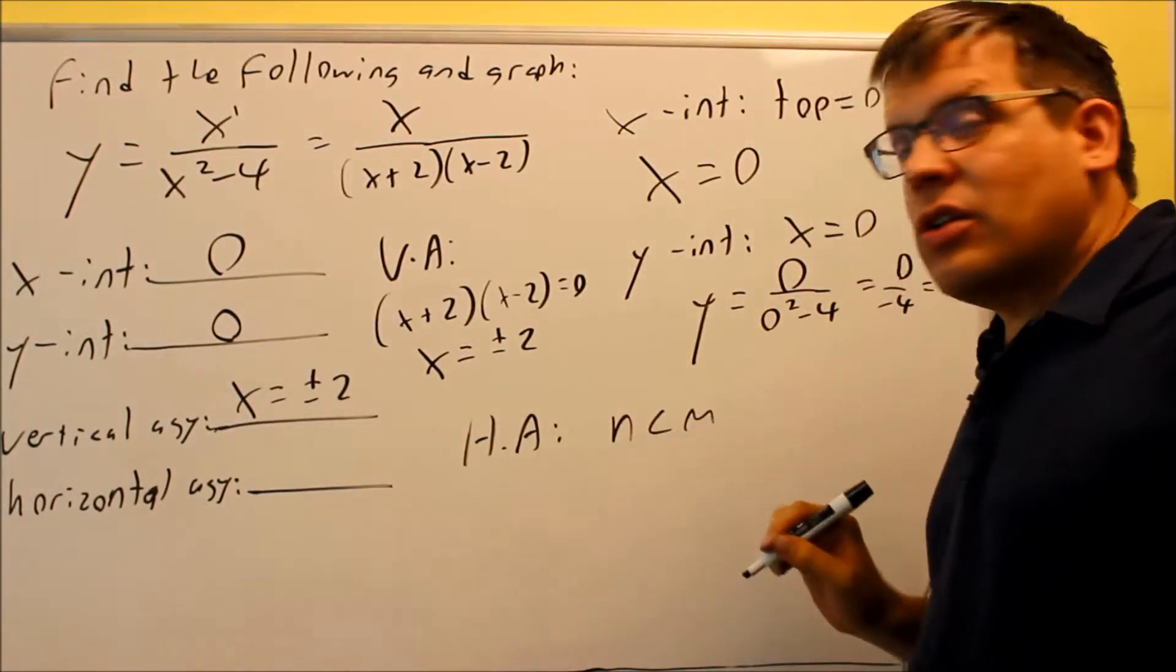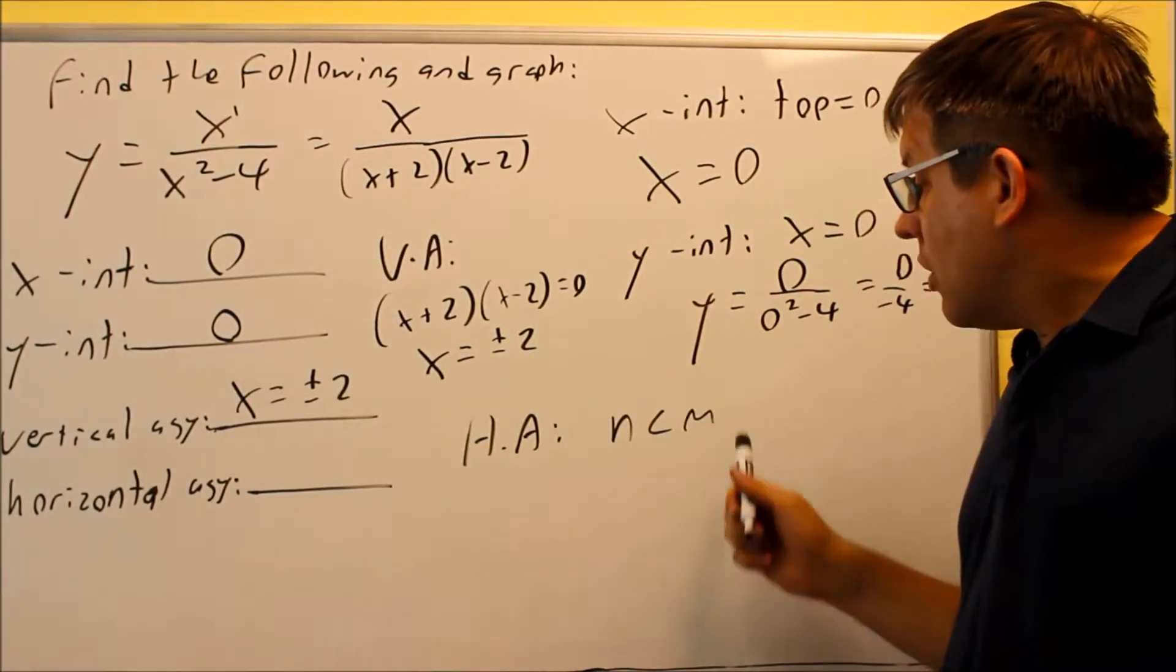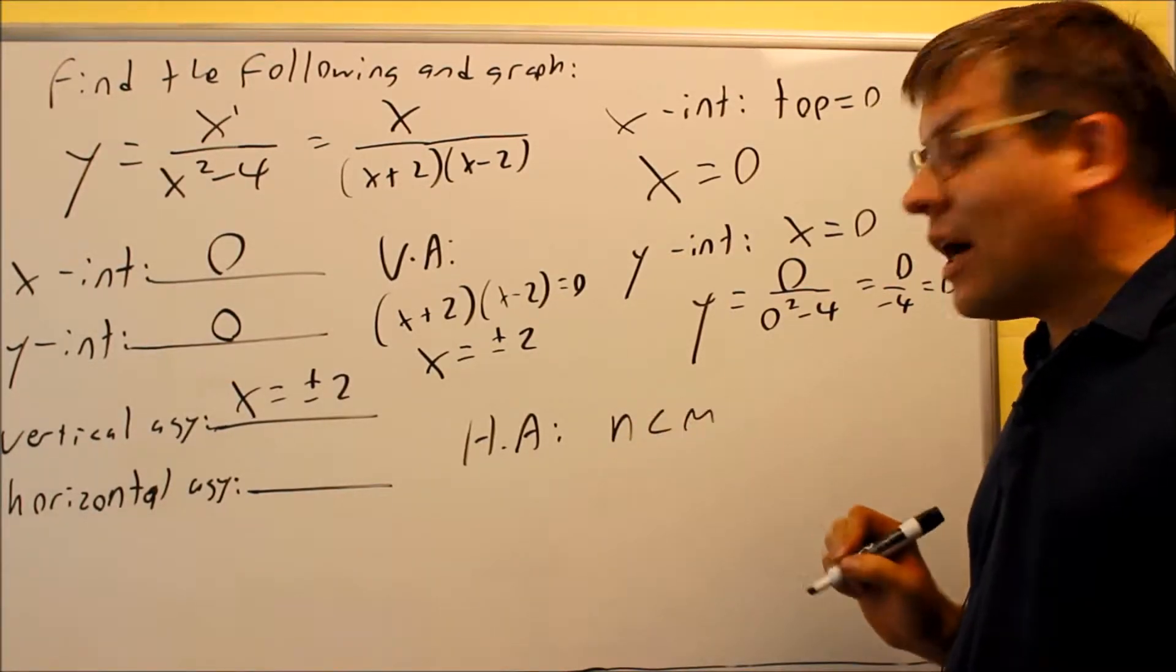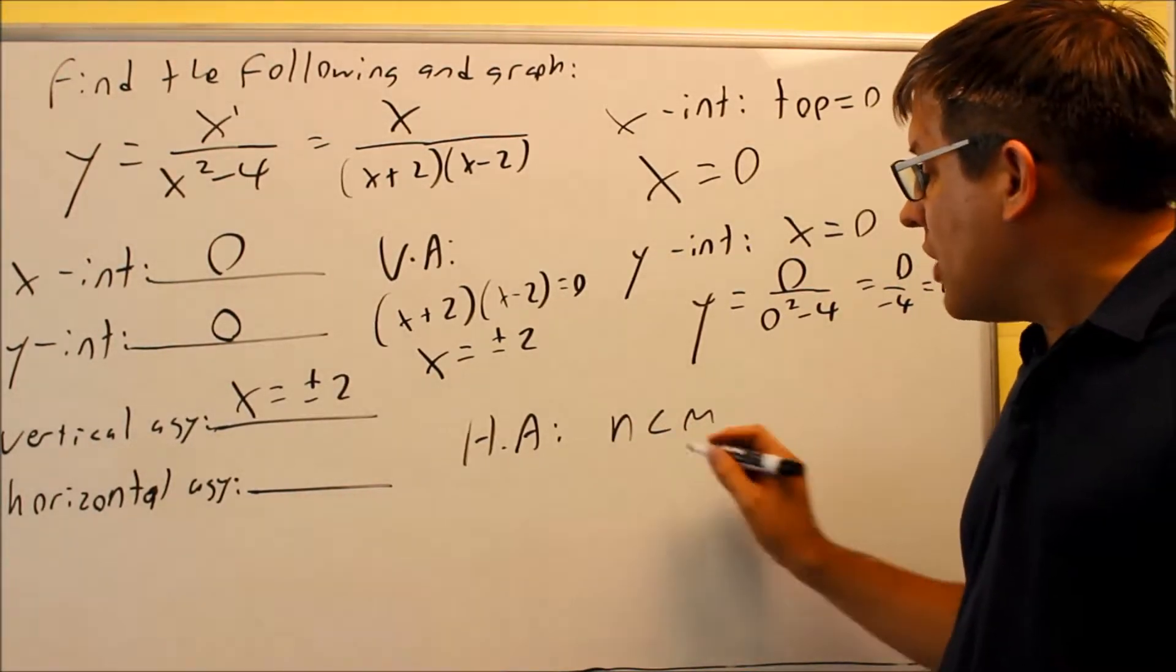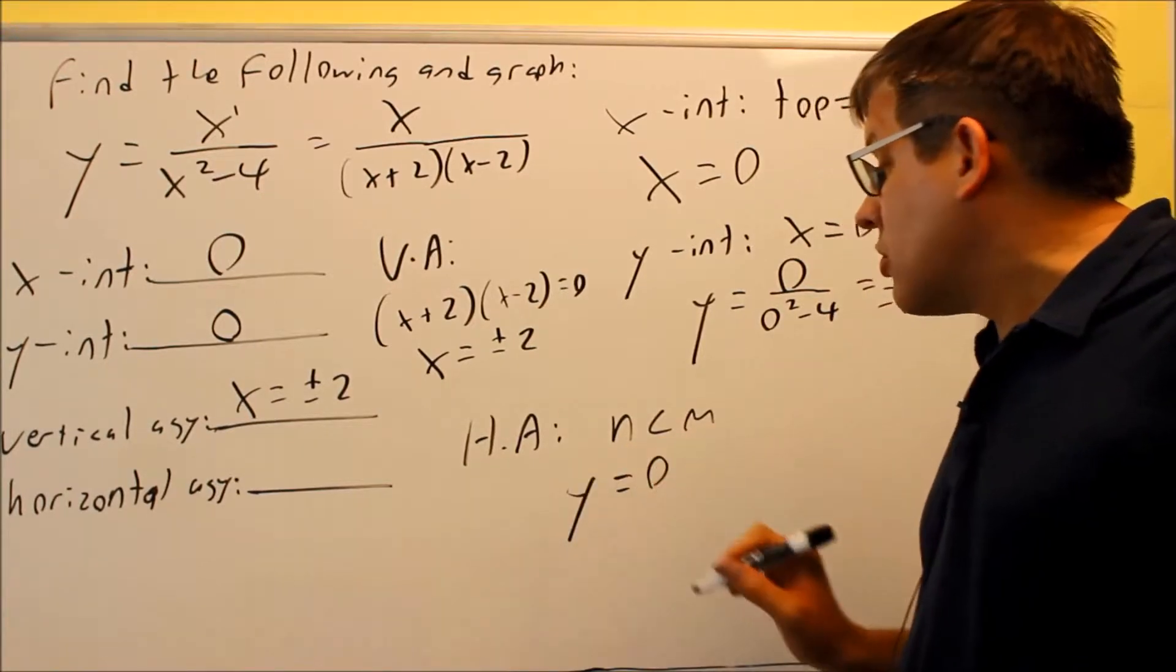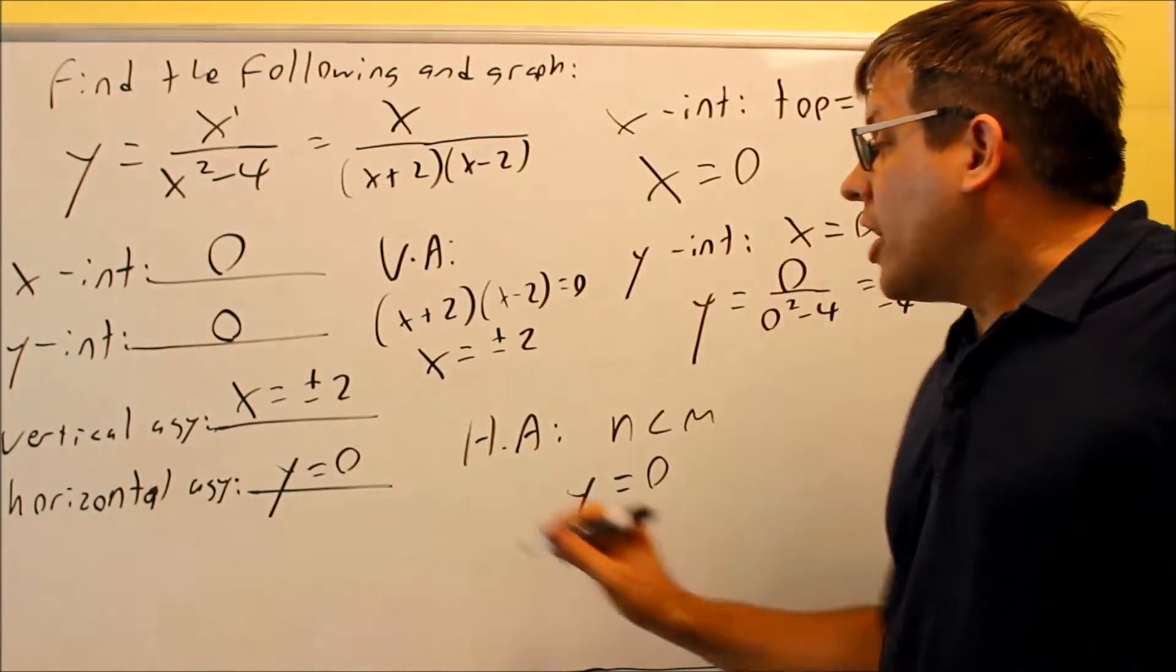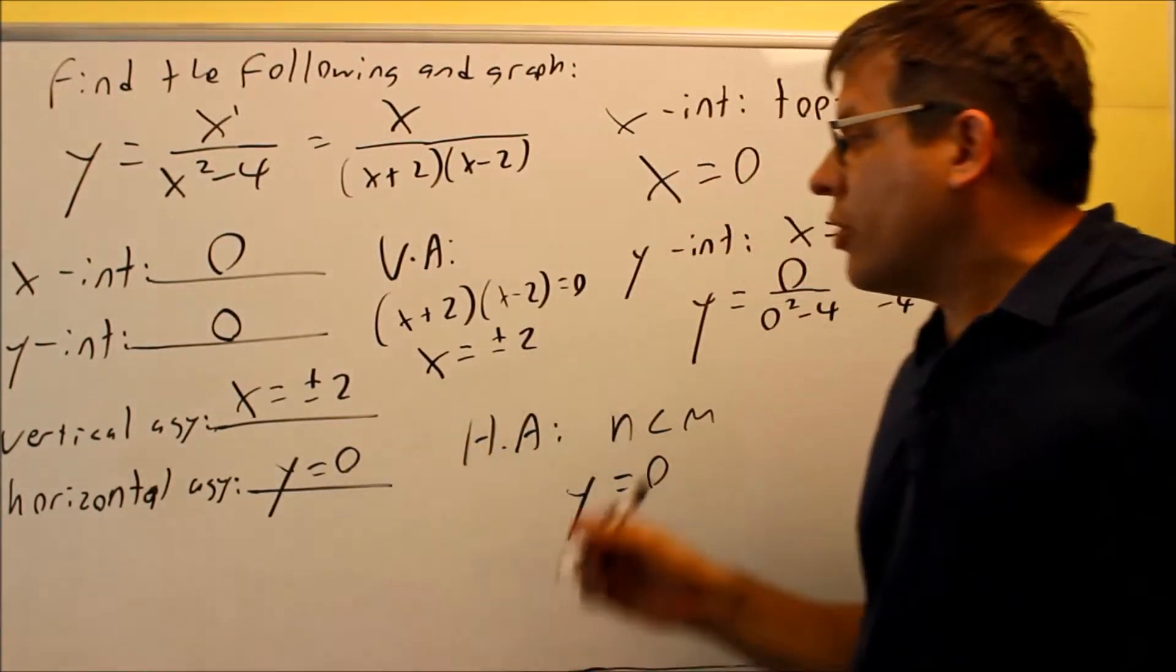This would be an example of the first rule. The highest power on top is less than the highest power on the bottom, which means that automatically your horizontal asymptote is going to be 0. So I have Y equals 0 for that one. So now that I have the information complete, I'm now ready to draw the graph.